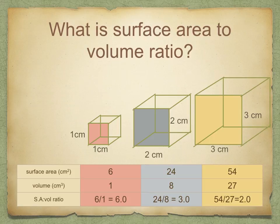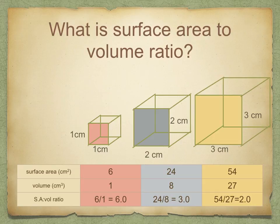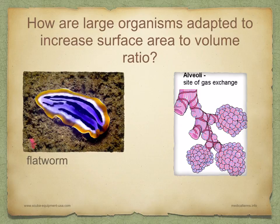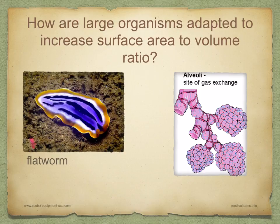This is important when considering exchange surfaces. Protoctists have a large surface area compared to their volume, and this is sufficient for exchange over their surfaces. Larger organisms have a large volume, but it would take a long time for substances to get to the middle of the organism from their surface. Some organisms have a flattened shape, for example this flatworm, which means that no cell is ever far from the surface. Or organisms have specialised exchange surfaces with a large area compared to the volume — for example, in your lungs you've got alveoli, and gills in fish.